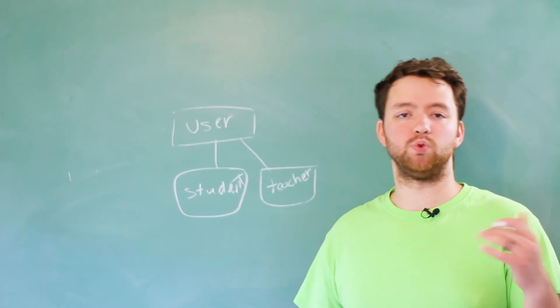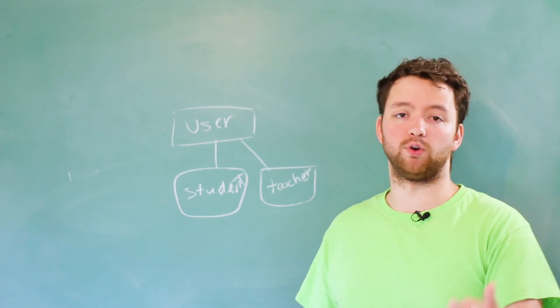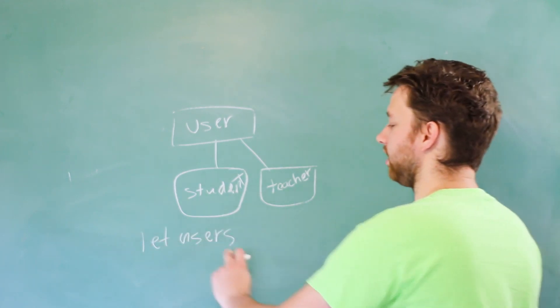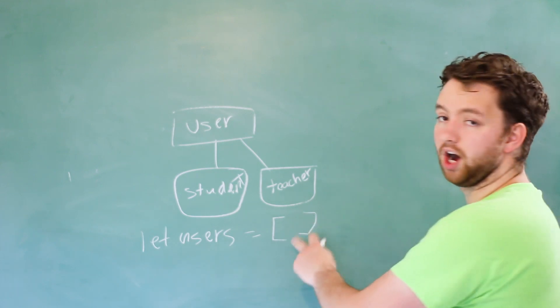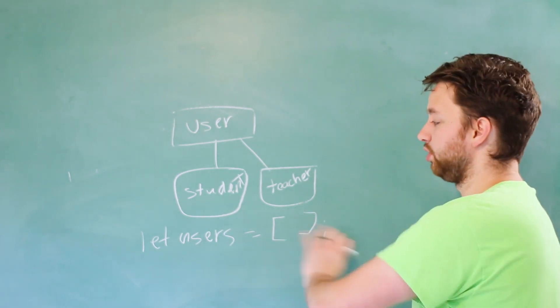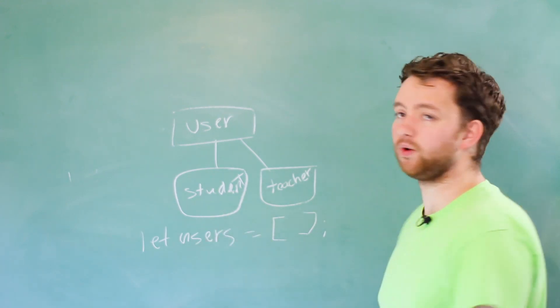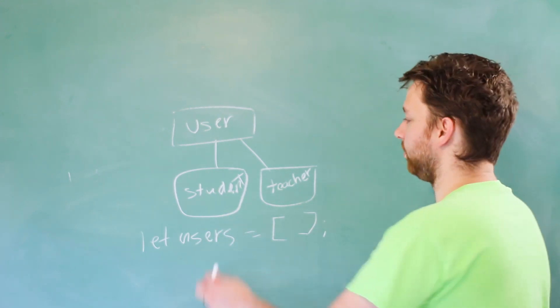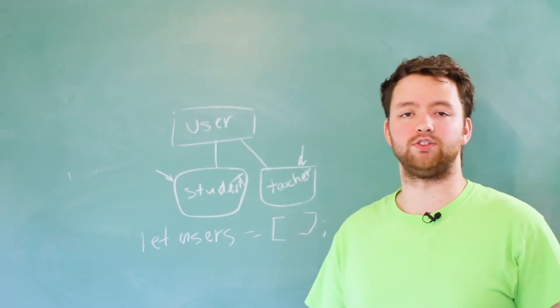So inside of JavaScript, we'll often have a collection of similar items. So think of an array of users. We might say let users, and we might assign an array to this with some objects inside of it, or we might push objects onto this array. But essentially, this array is going to be used just for users, which can include students or teachers. And that's totally fine in JavaScript.